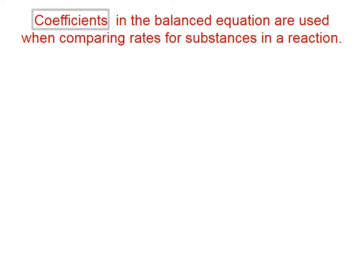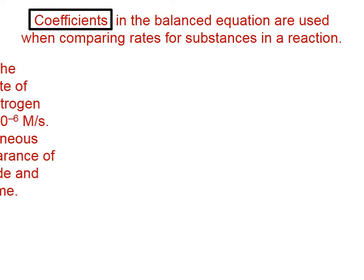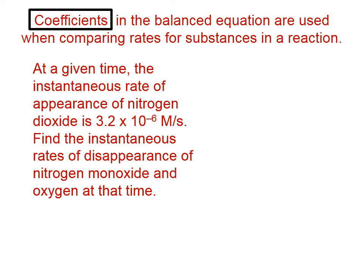Coefficients in the balanced equation are used when comparing rates for substances in a reaction. Let's give you an example. At a given time, the instantaneous rate of appearance of nitrogen dioxide is 3.2 × 10^-6 M/s. The fact that it says nitrogen dioxide is appearing implies that nitrogen dioxide is a product.